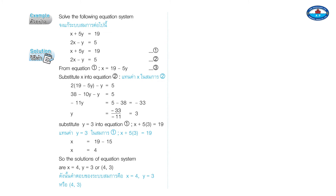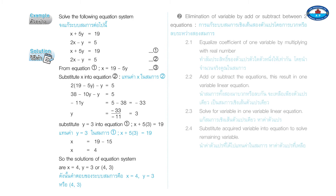Substituting: 2 times (19 minus 5y) minus y equals 5; 38 minus 10y minus y equals 5; negative 11y equals 5 minus 38 equals negative 33; y equals negative 33 over negative 11 equals 3. Substitute y equals 3 into Equation 1: x plus 5 times 3 equals 19; x equals 19 minus 15; x equals 4. So the solutions are x equals 4, y equals 3, or (4, 3).